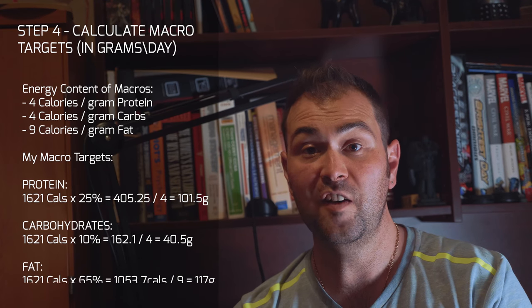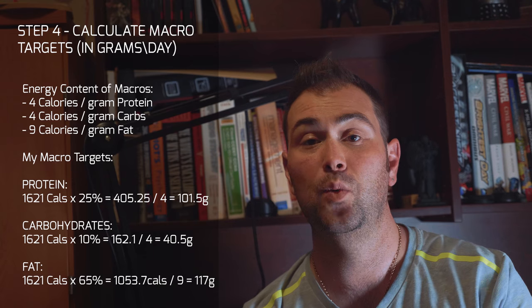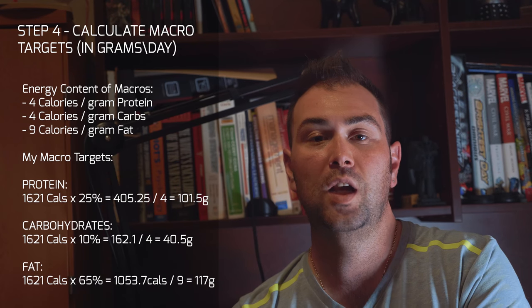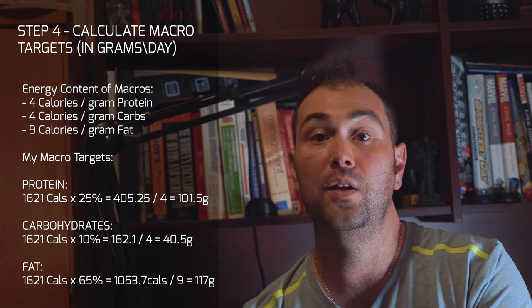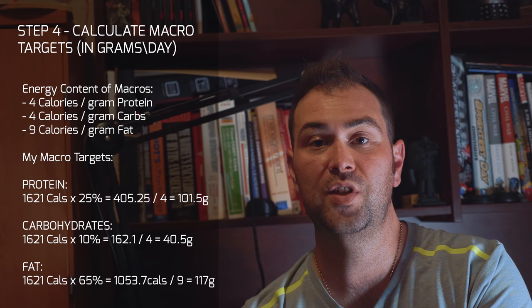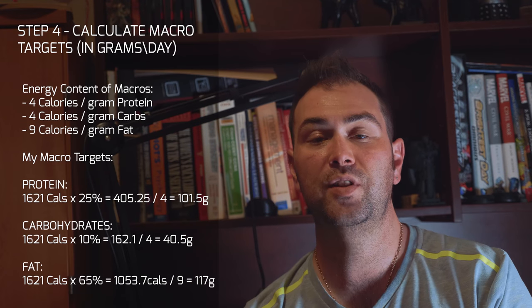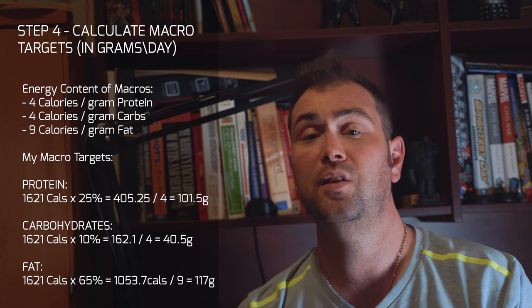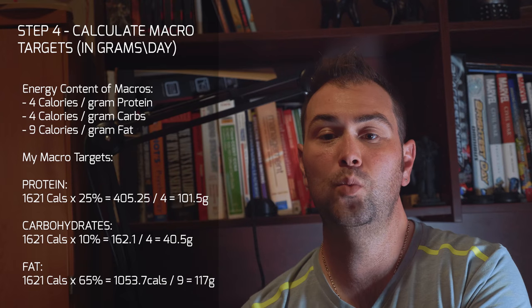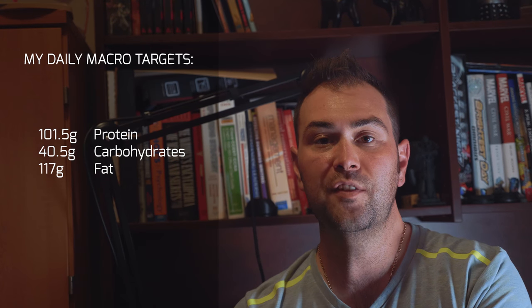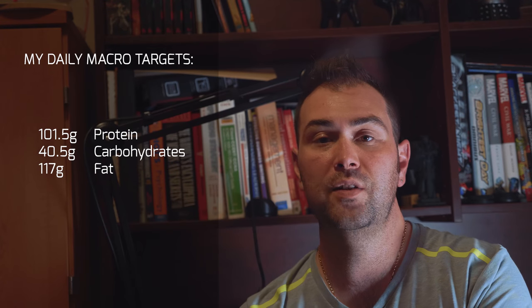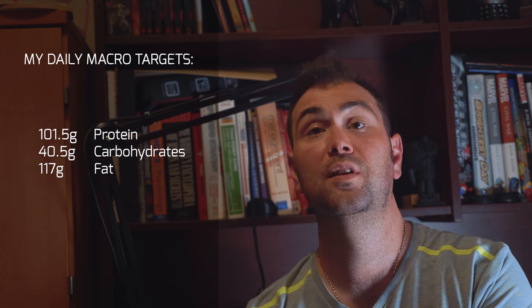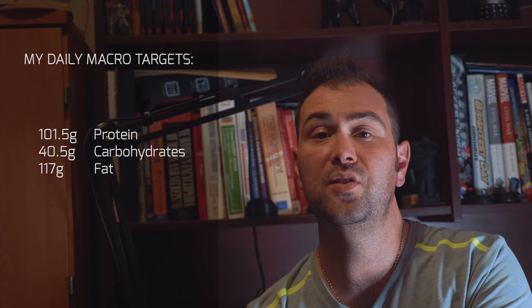And finally, we have fat. So I said that I'd be eating 65% of my diet of 1,621 calories using fat, which calculates to 1,053.7 calories. And if I divide that by nine, because don't forget, you get nine calories per gram, so I divide 1,053.7 by nine, that gives me 117 grams of fat. And that's it. It's complicated to get there, but once you do get there, the only thing I really care about at the end of it is I need to eat 101.5 grams of protein, 40.5 grams of carbohydrates, and 117 grams of fat per day. They're my macro targets. And now I can build my intermittent fasting based diet and nutrition plan on a daily basis around those three numbers.